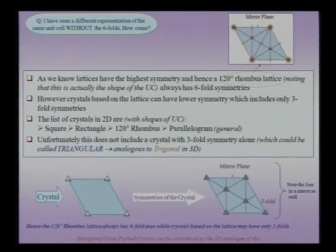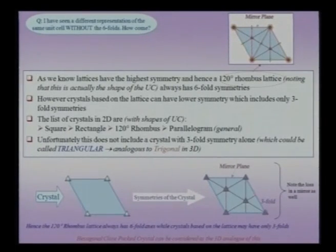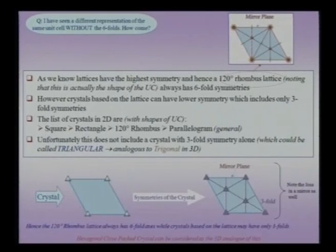If I overlay the symmetry of this crystal on the unit cell, I see only 3-folds and no 6-fold — which is what you sometimes see in textbooks. What you need to understand when you see such a figure is that it has been added to help you understand crystals based on the 120-degree rhombus lattice, which come under the class of the 120-degree rhombus crystal.